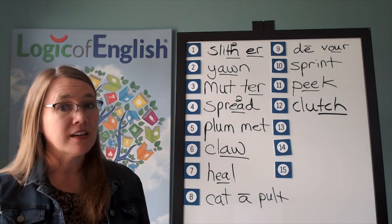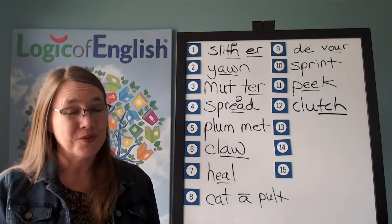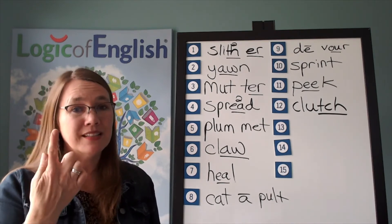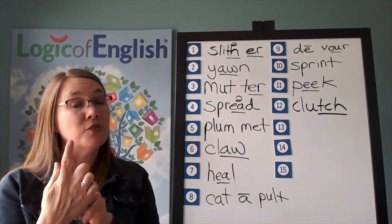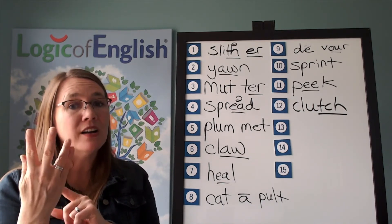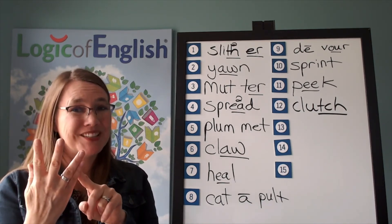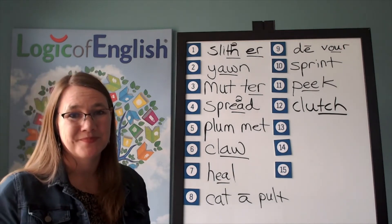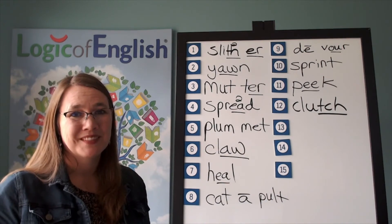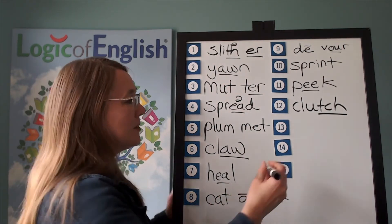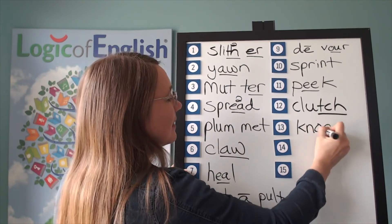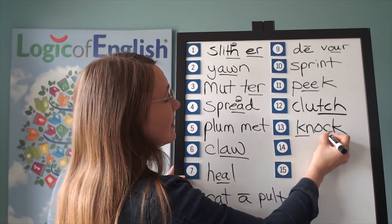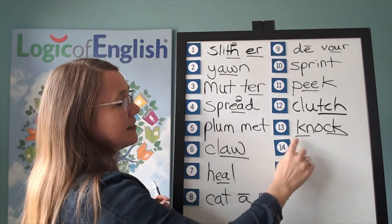The next word is knock. Did you hear a knock on the door? Knock. Go ahead and say knock. Let's sound it out: two-letter kn — that you may use only at the beginning of a base word — o, two-letter ck. Go ahead and write knock. Help me to write it: kn, o, ck. We'll underline the kn and the ck. Let's read it: kn-o-ck — knock.